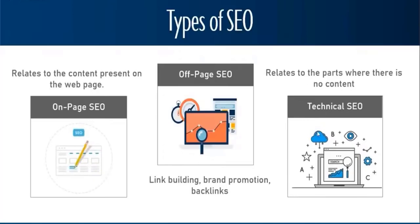Technical SEO relates to site speed — like optimizing your JavaScript, your images, and how your ads load if you are a publisher site. It also includes mobile friendliness — whether the layout of your page is suitable for mobile or handheld devices — as well as indexing, crawlability, site architecture, structured data, and security.